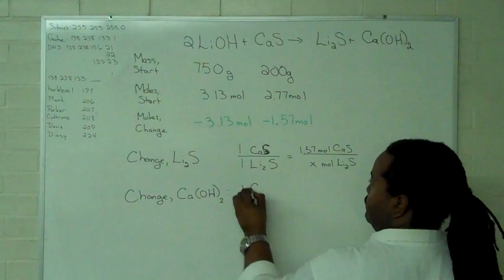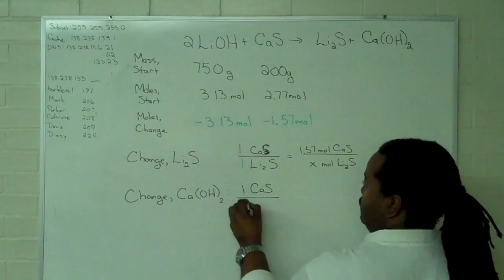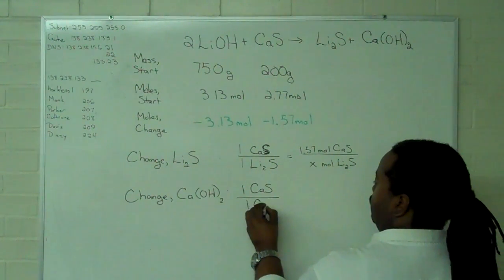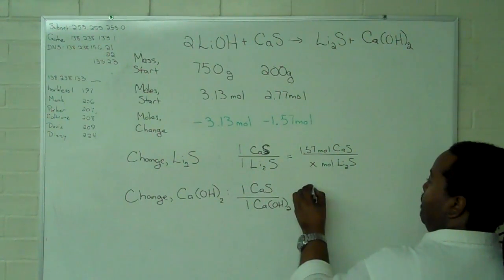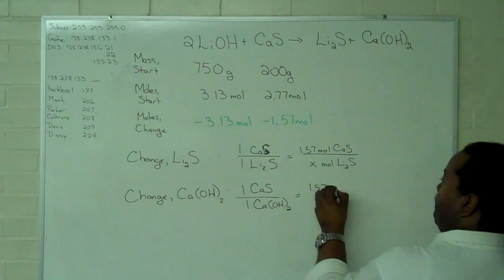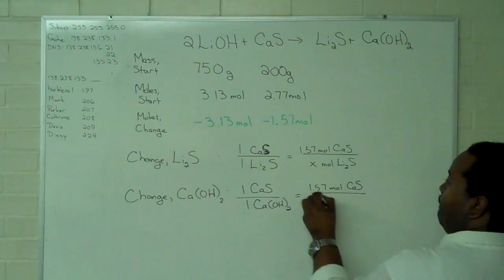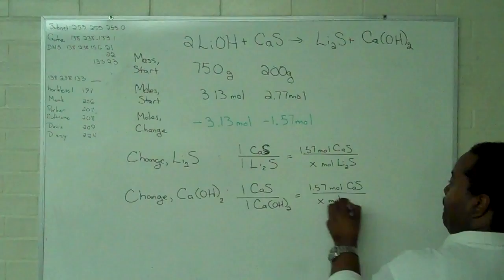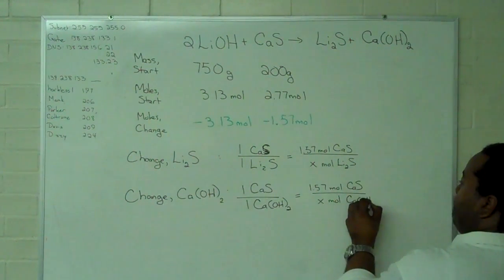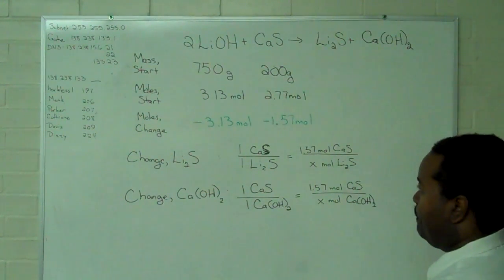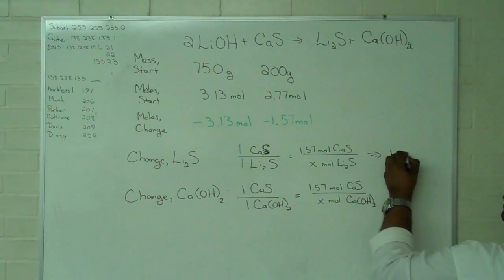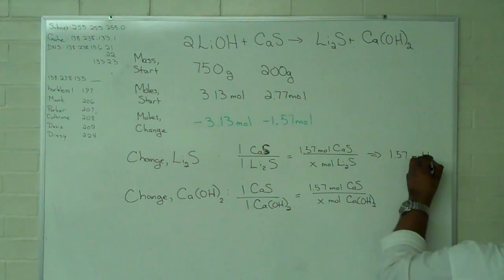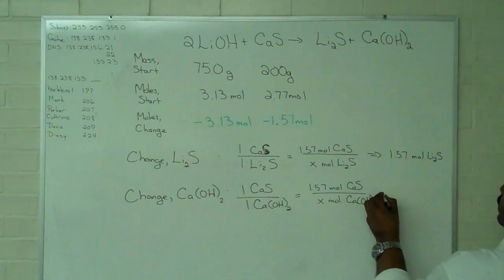I can place this into our ratio. And I can use the same information for the calcium hydroxide. And so, in both of these cases, I'm going to get 1.57 moles of each product.